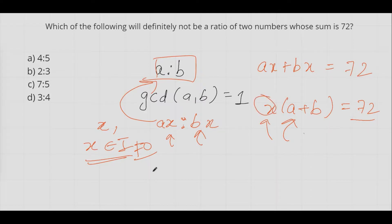We can start checking with the first option. Four plus five equals to nine. Does nine divide 72? Yes it does. Nine times eight equals to 72.